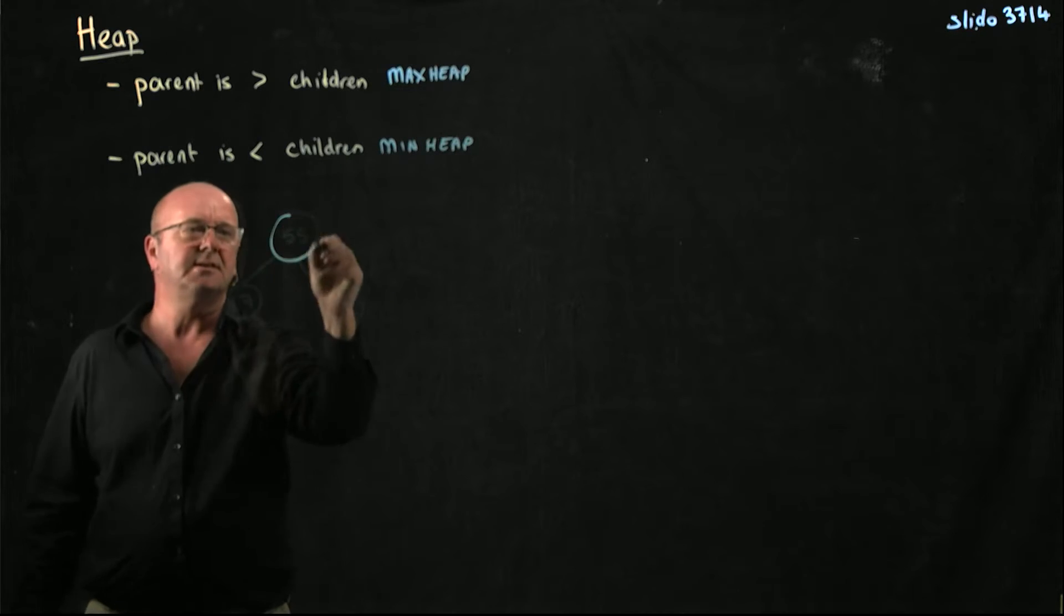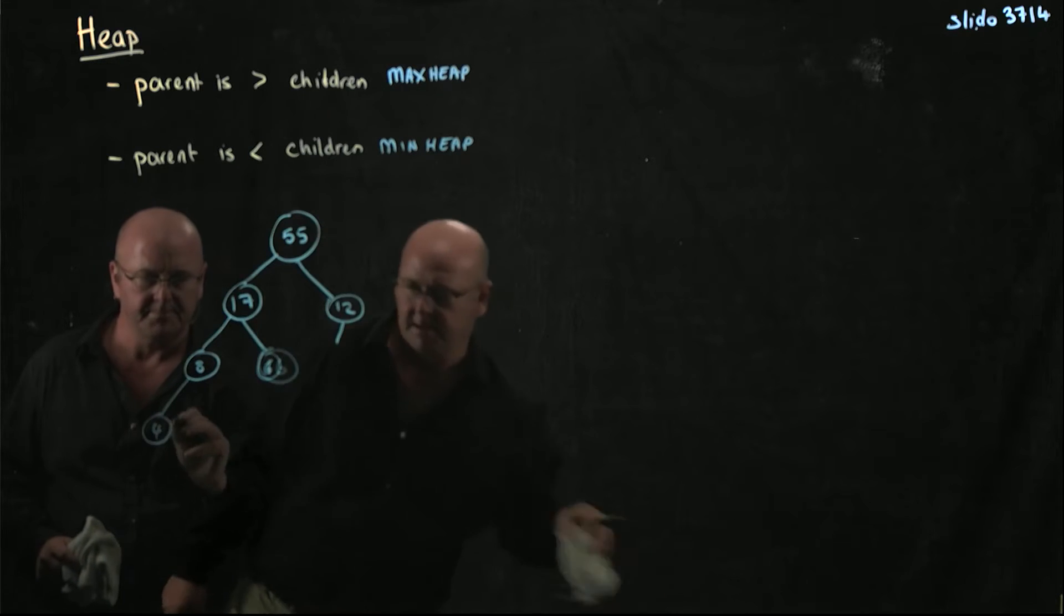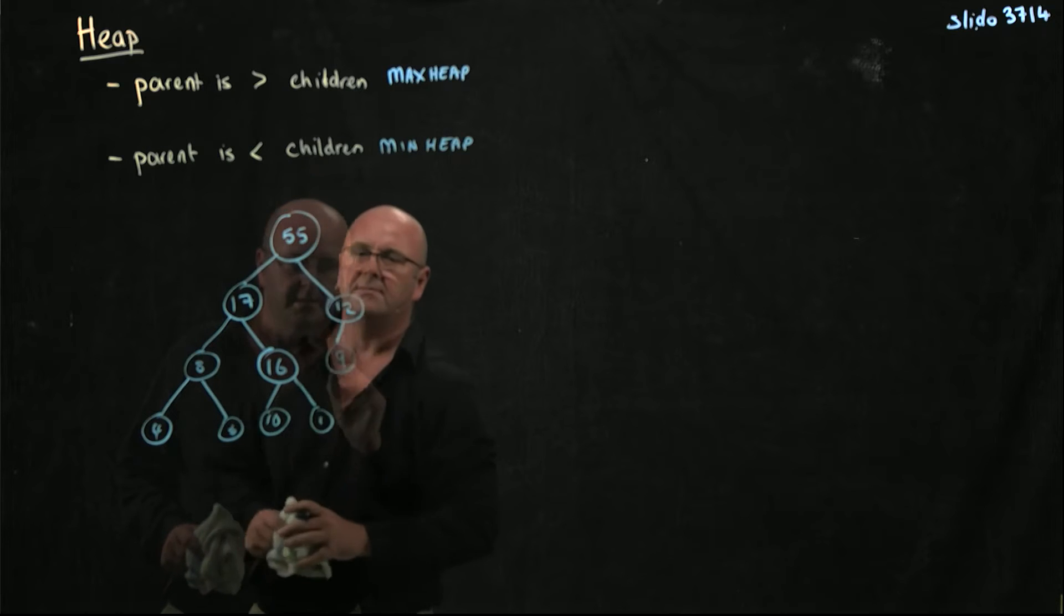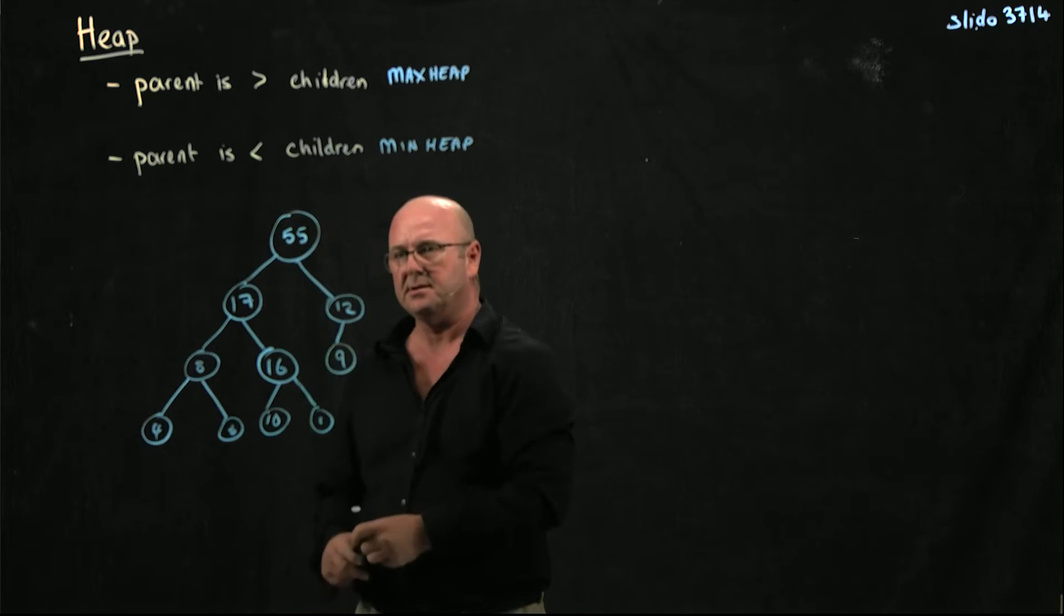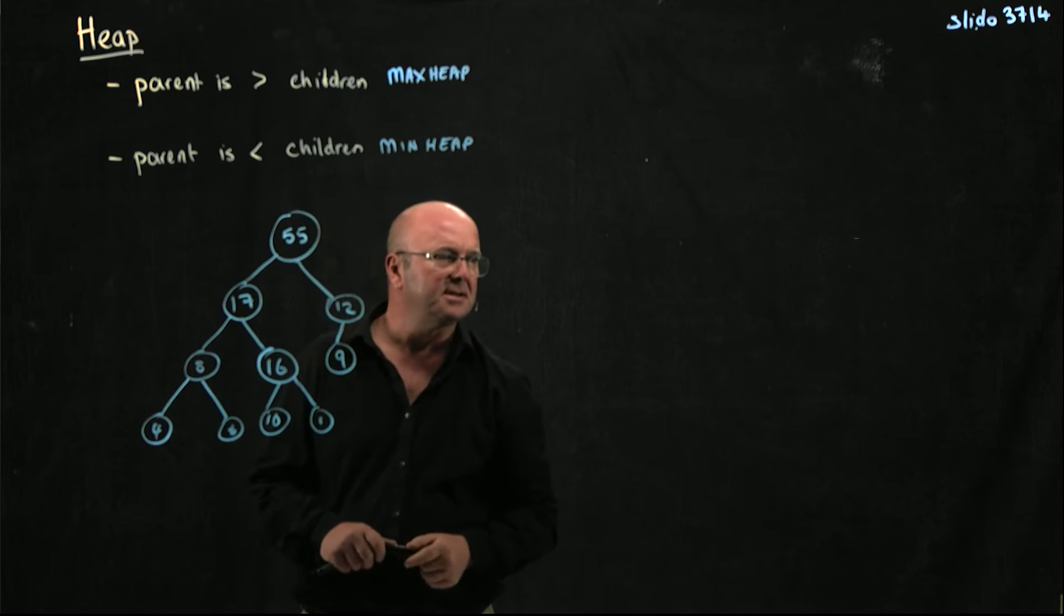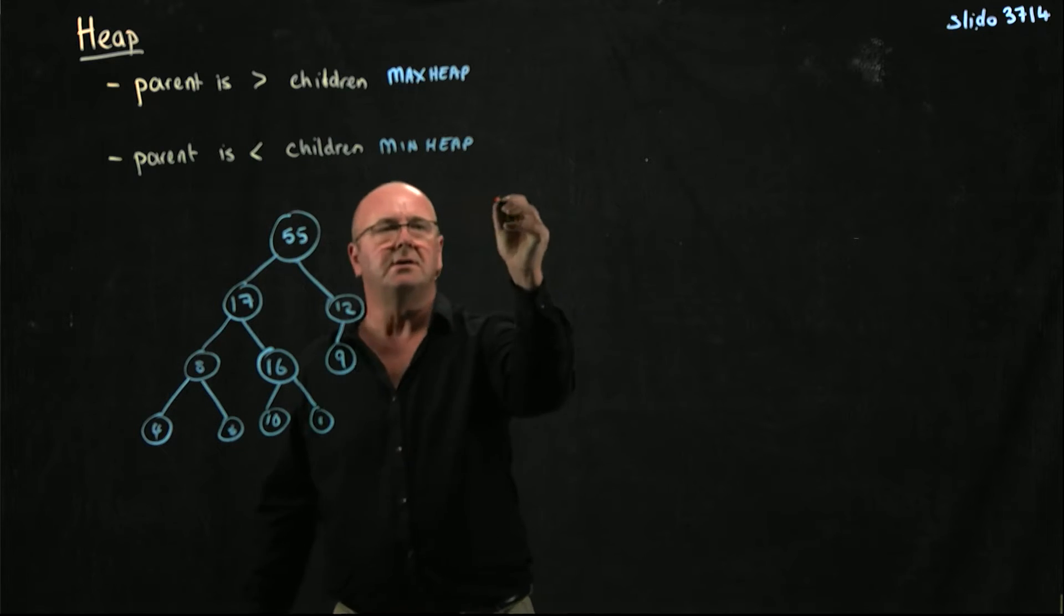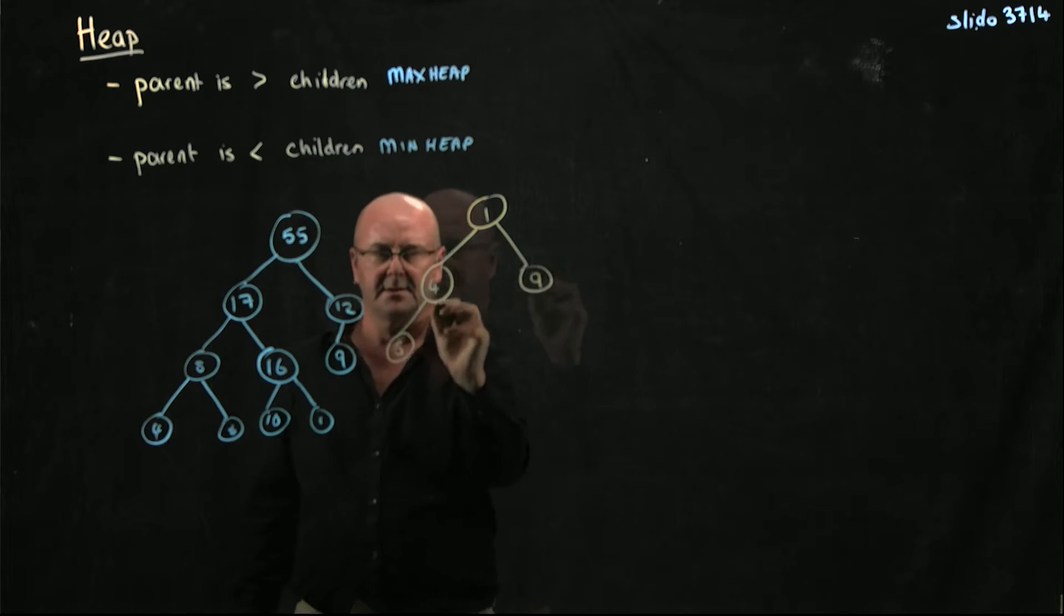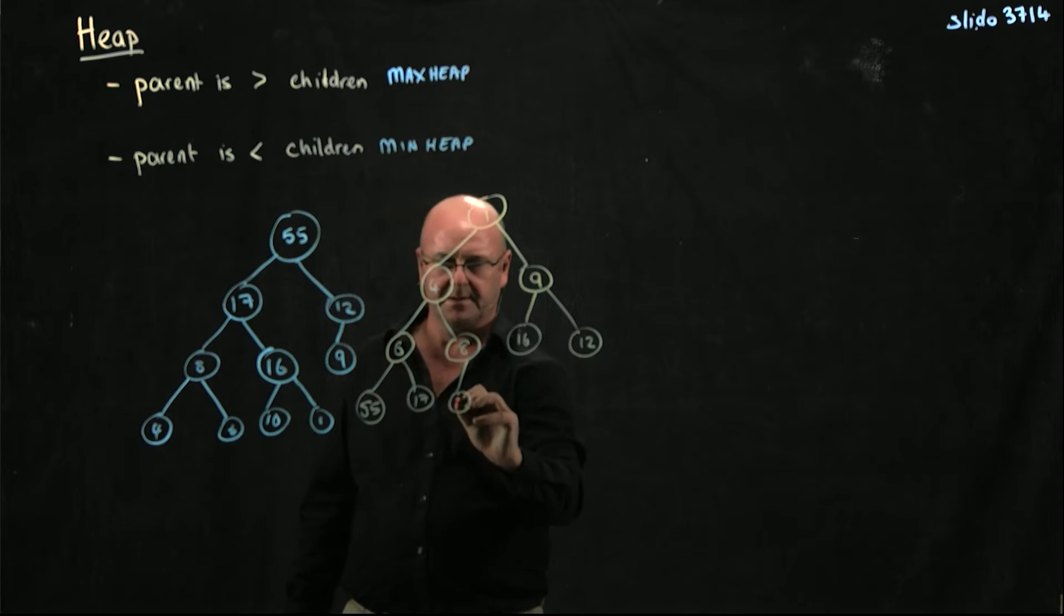If we have some numbers on our heap, the only rule is that the parent is always greater than the children. It doesn't matter whether a node on one side is bigger than a node on the other side. In a heap, the only rule is that the parent is bigger than the children, or that the parent is smaller than the children.